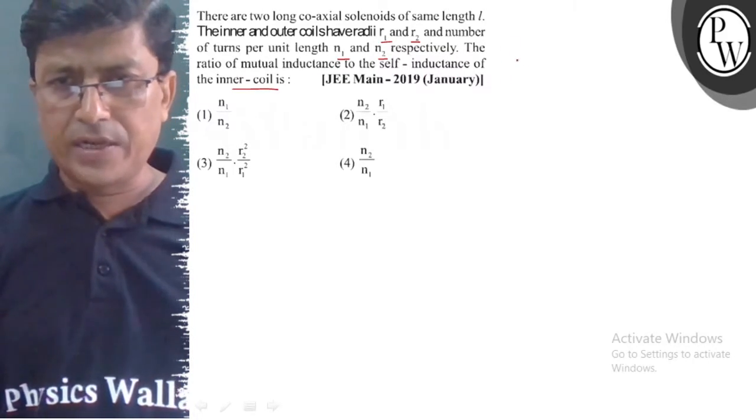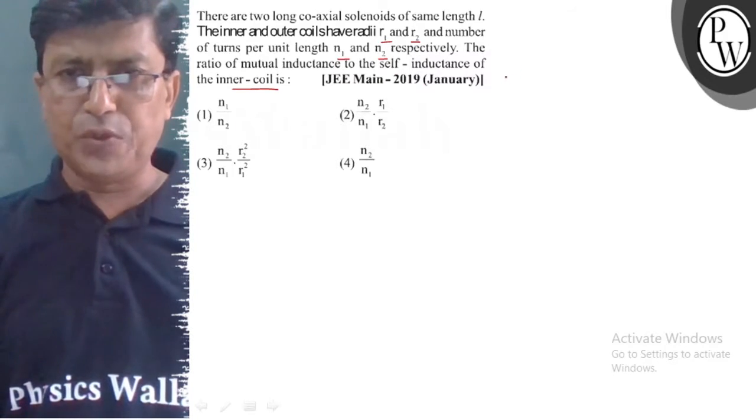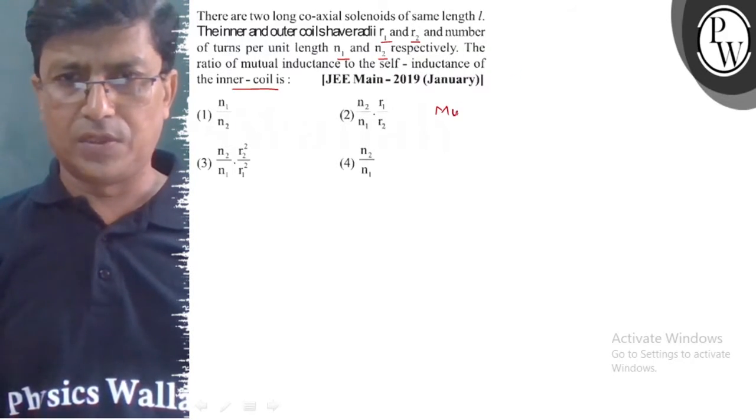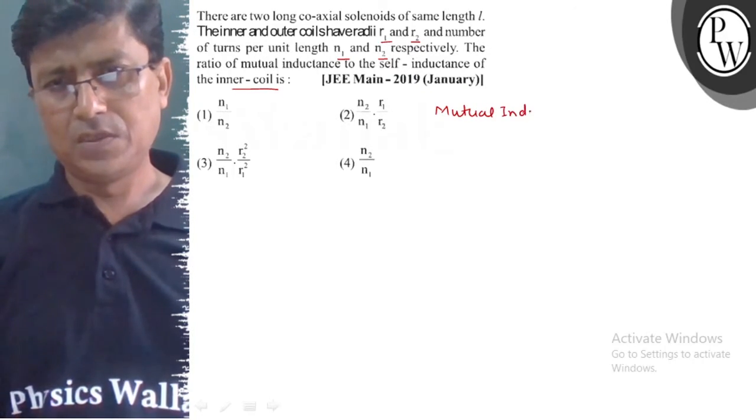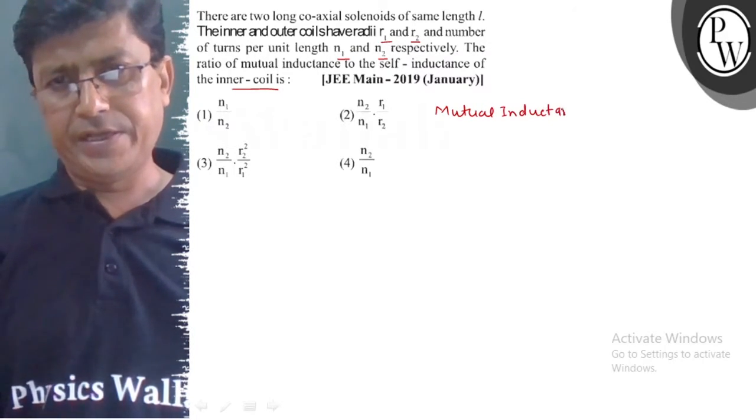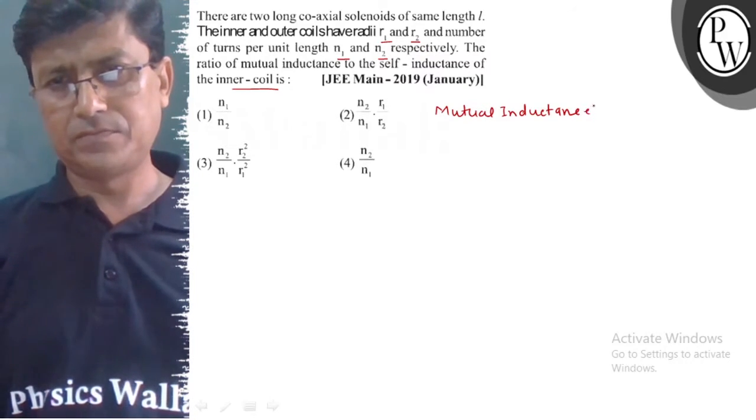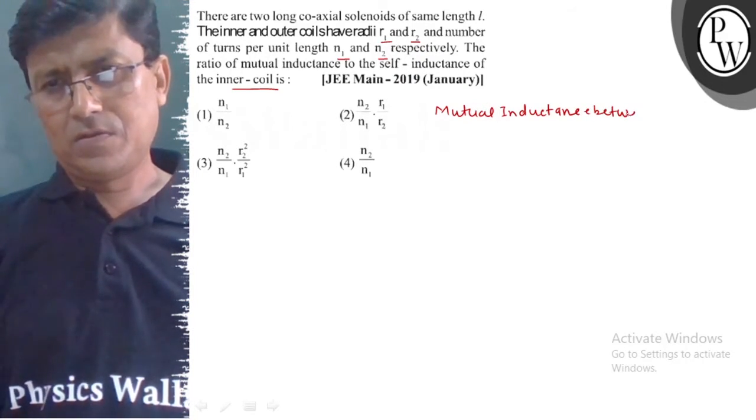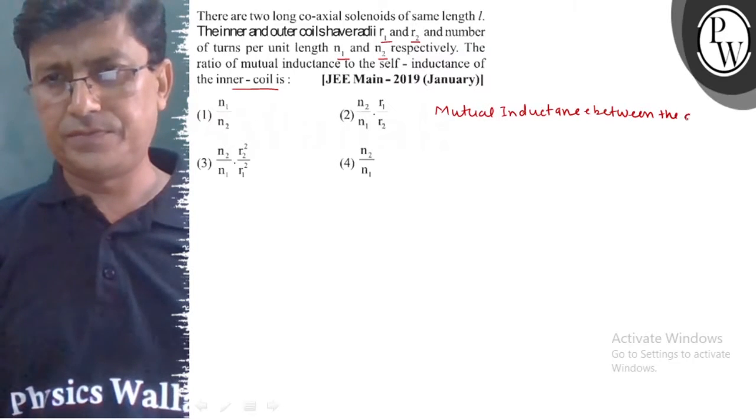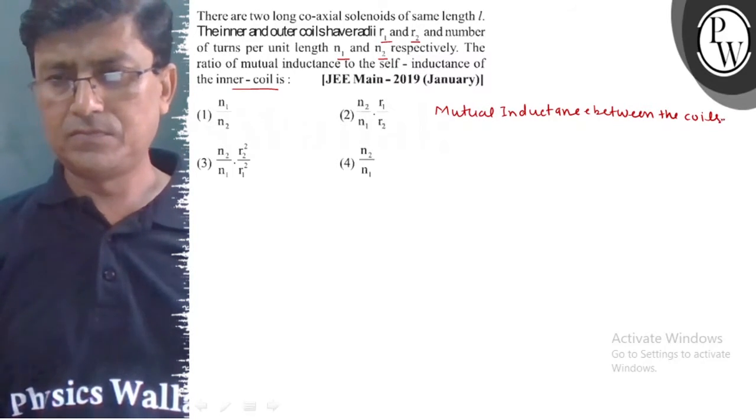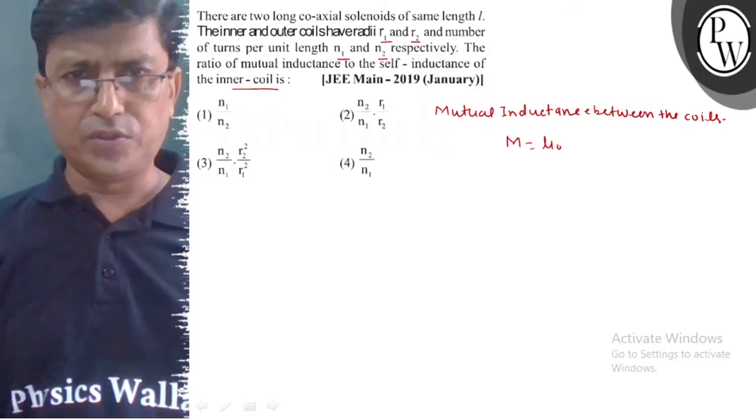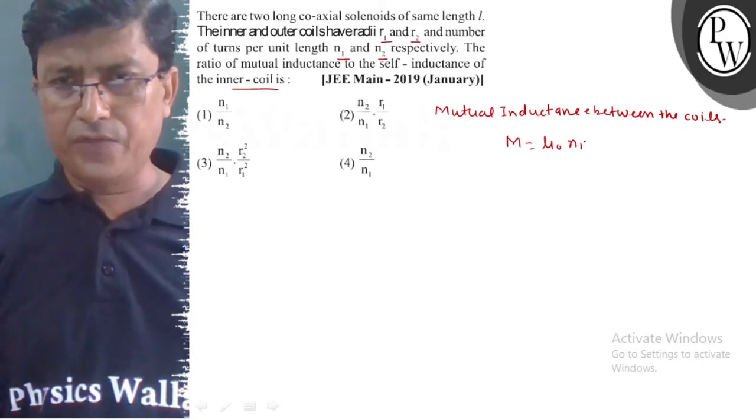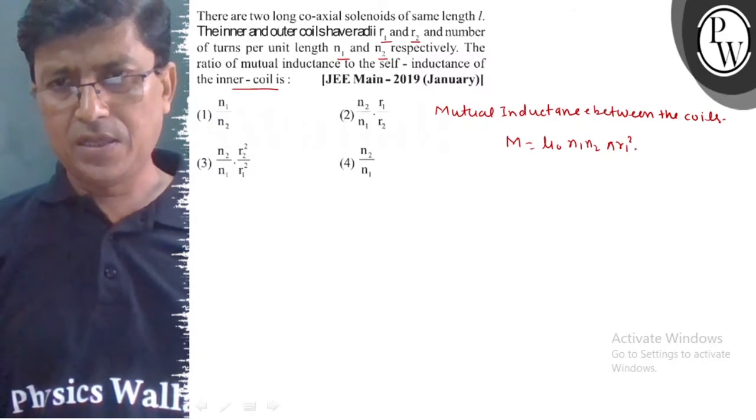Look, if we talk about mutual inductance between the coils, the value M is equal to mu0 N1 N2 pi R1 square divided by L.